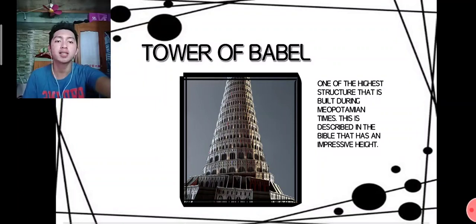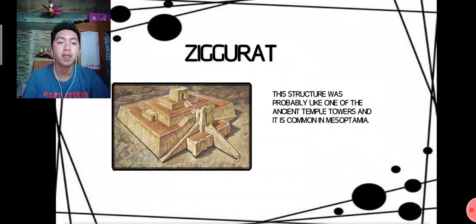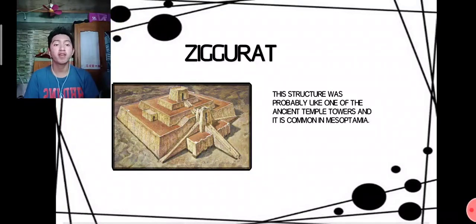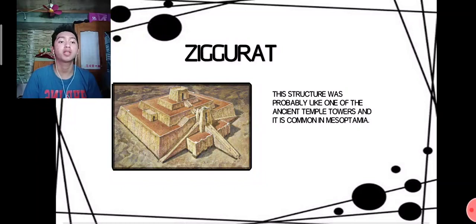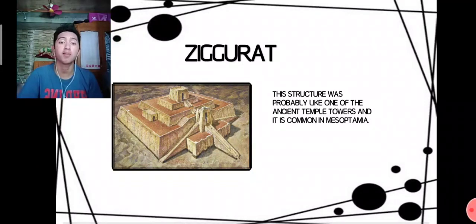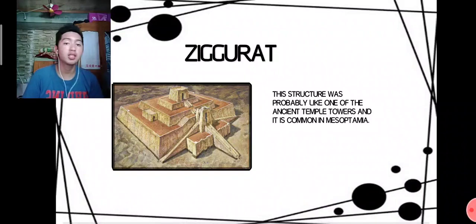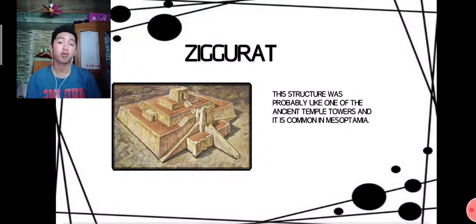Next is the Ziggurat. This structure was probably one of the ancient temple towers, and it is common in Mesopotamia. It is believed to have been used for worshipping their gods or for gatherings.